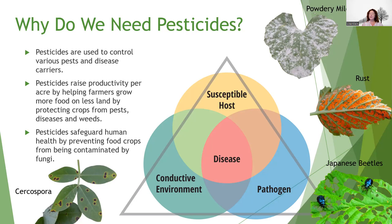Ultimately, pesticides were invented back in the mid-century, around the 1950s, and they really raised productivity of crops per acre. As the population has increased, farmers have had to get more knowledgeable about how to treat crops and increase their productivity per acre. Pesticides also safeguard human health by preventing food crops from being contaminated. A lot of times we're storing crops and you don't want to lose a whole season's worth of wheat or barley to a fungal infection, because then it's not usable — many of those fungi create toxins.